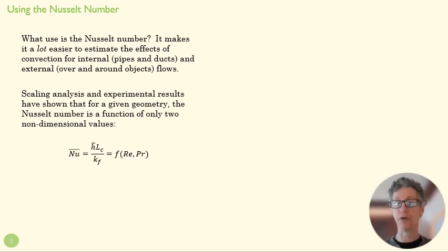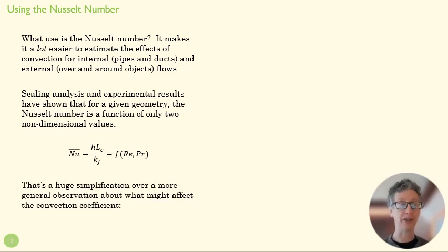And what both of those processes, scaling and experimental results show, is that the Nusselt number is a function of the Reynolds number and the Prandtl number. Okay, why does that matter?